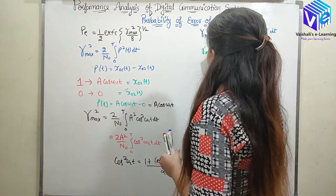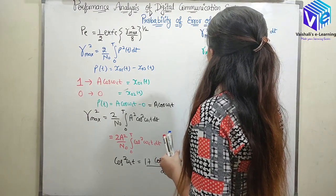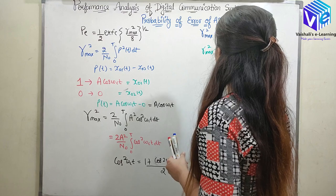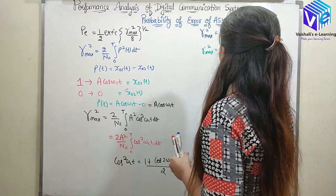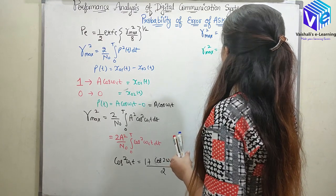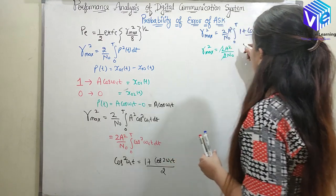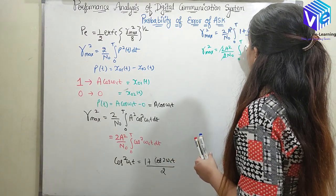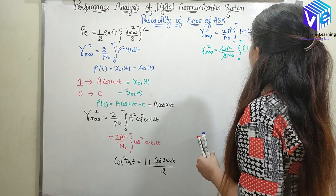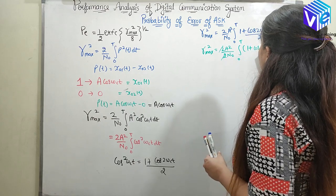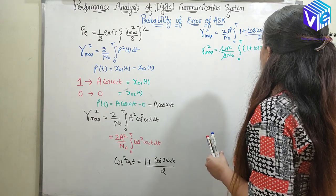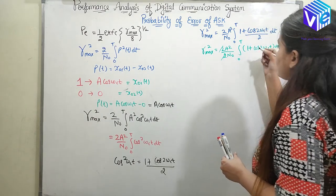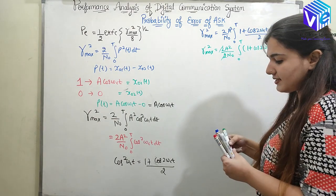Gamma_max² = (2A²) / (2N₀) × integral from 0 to T of (1 + cos(2ωc·t)) dt. The 2 and 2 cancel out, giving (A²/N₀) × integral from 0 to T of (1 + cos(2ωc·t)) dt. Now I can integrate it easily.